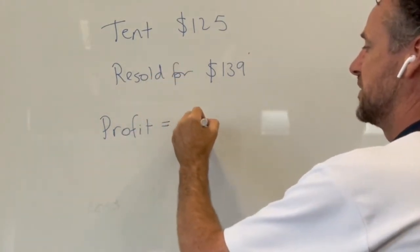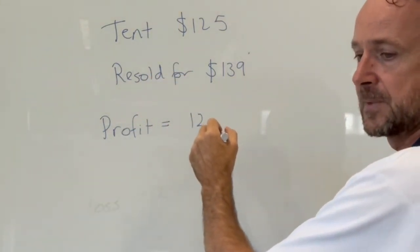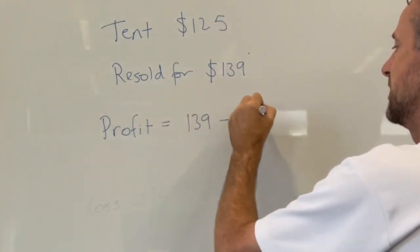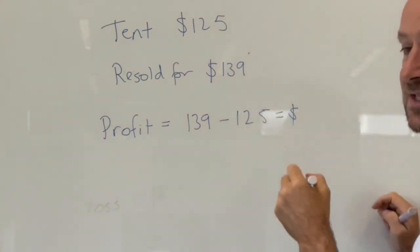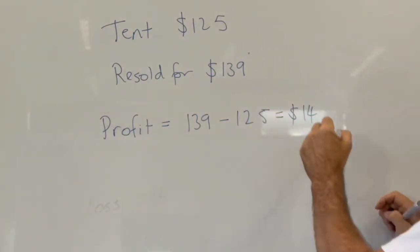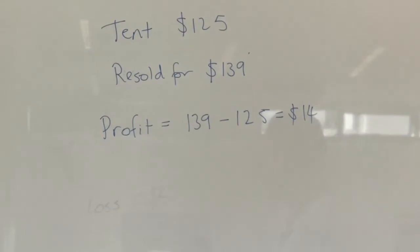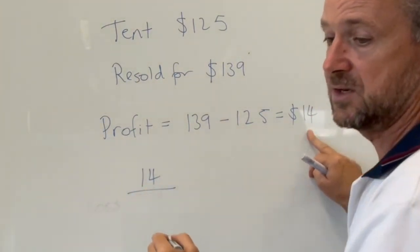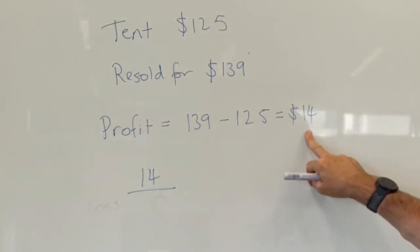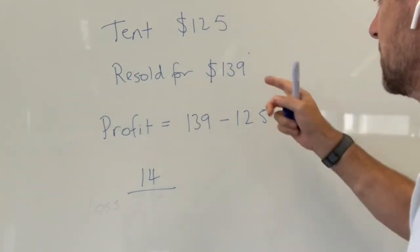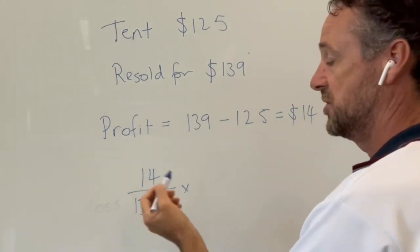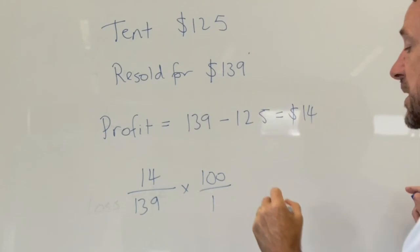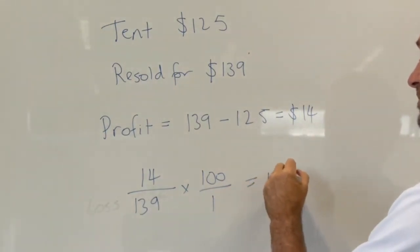The profit is $139 take away $125, so he made a profit of $14. Now we want to find out what that profit is compared to his selling price of $139. Turning that fraction into a percentage by multiplying by 100, we can see it's approximately a 10% profit.